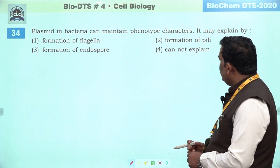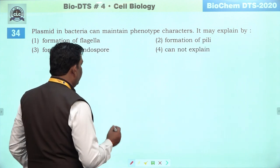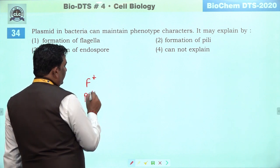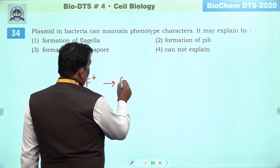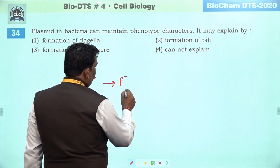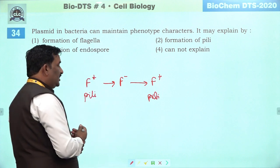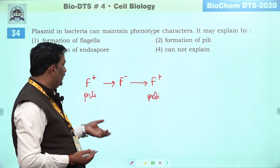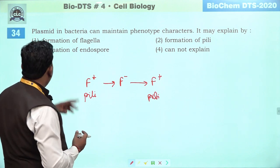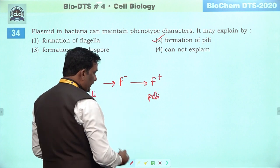Next question: plasmid in bacteria can maintain phenotype character — it may explain by. Bilkul sahi hai kyunki ek E. coli ke andar F-positive bacteria hota hai, iske andar pili paaye jaate hain. But jo F-negative bacteria hote hain unمیں pili absent hota hai. Jab conjugation process hota hai, us condition mein jo negative hai woh phir se F-positive mein convert ho jaate hain — inمیں phir se pili ki presence hoti hai. Iska matlab hai ki jo pili hai woh phenotype character ko represent kar rahe hain, jo ki F-plasmid ke zariye conduct kiya ja raha hai. Second is the right answer.